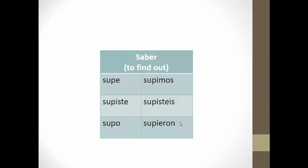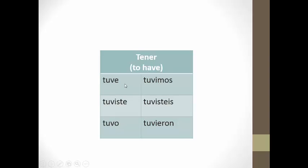The last verb we need to conjugate is tener, which means to have. Remember, its stem is TUV. Go ahead and put TUV in all the boxes. Your conjugation should look like this: tuve, tuviste, tuvo, tuvimos, tuvieron.